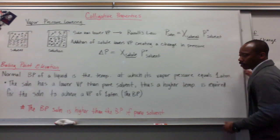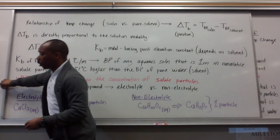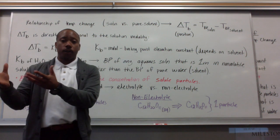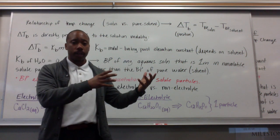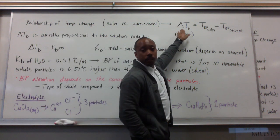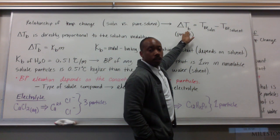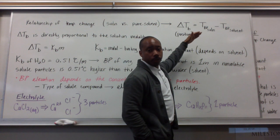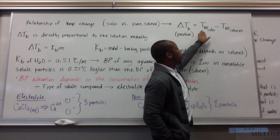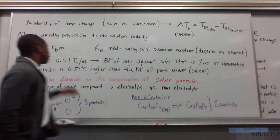Now we can talk about the temperature difference between the boiling point of a solvent versus the boiling point of a solution with delta T sub B. This is the change in temperature for boiling point, from solvent to solution. It's equal to the boiling point of the solution minus the boiling point of the solvent.